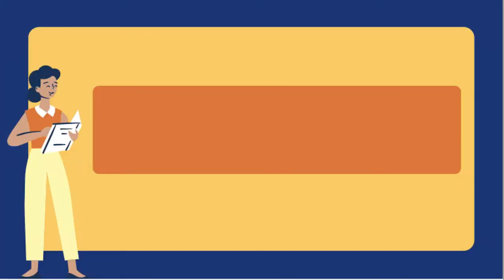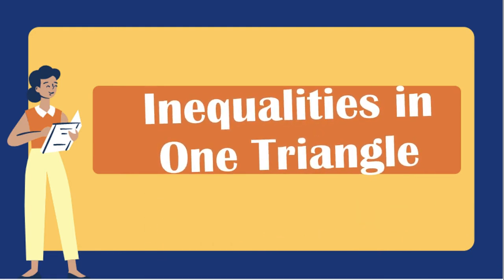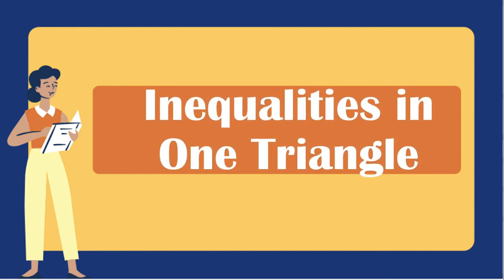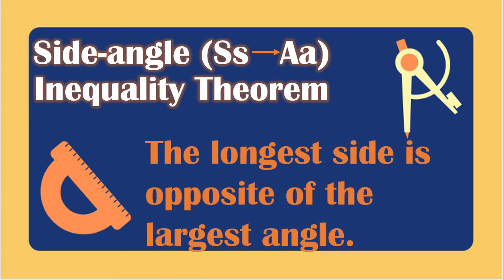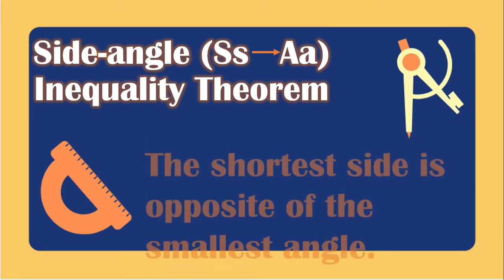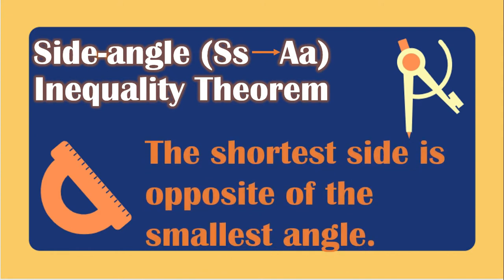In this module, we will be dealing about the inequalities of a triangle. Let us start with inequalities in one triangle. We have the side angle inequality theorem, which states that the longest side is opposite of the largest angle and the shortest side is the opposite of the smallest angle.